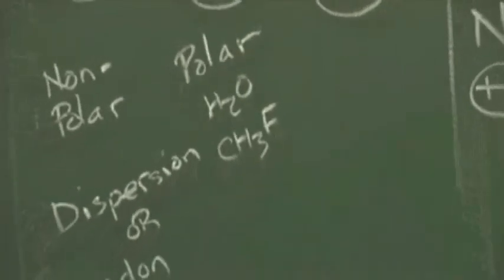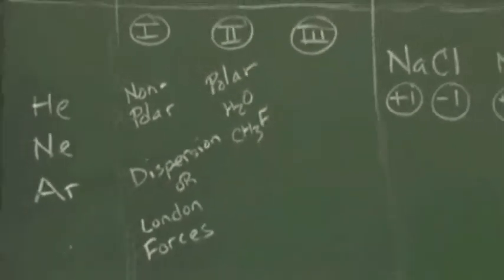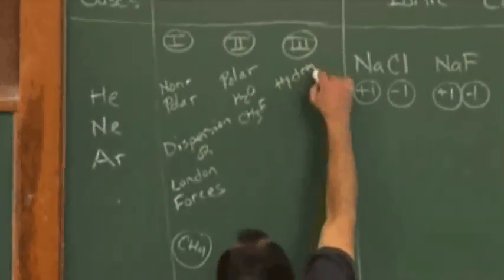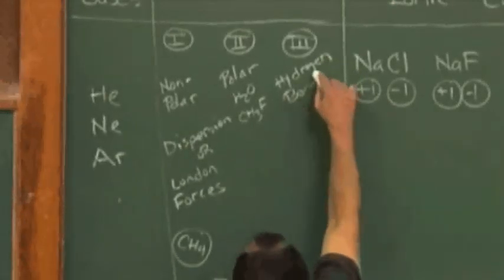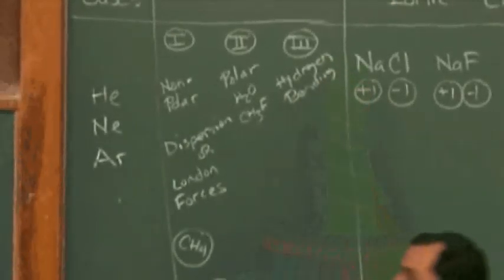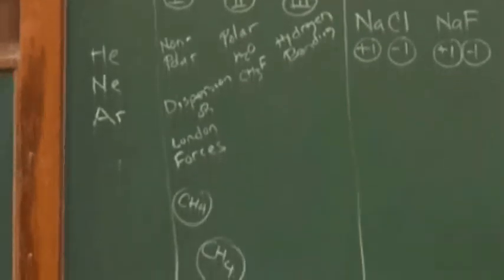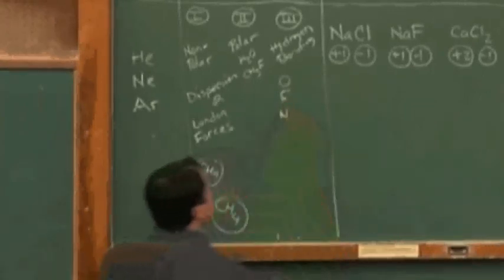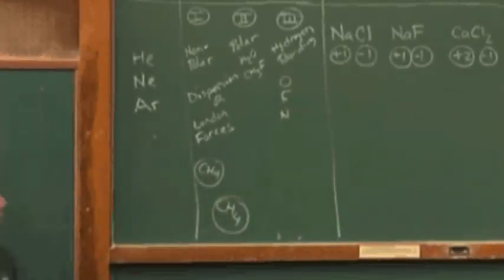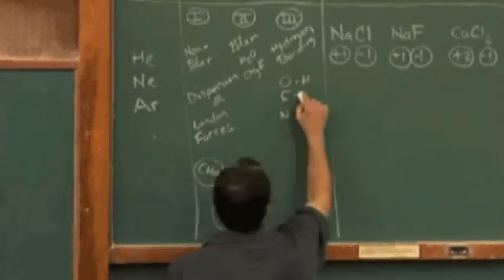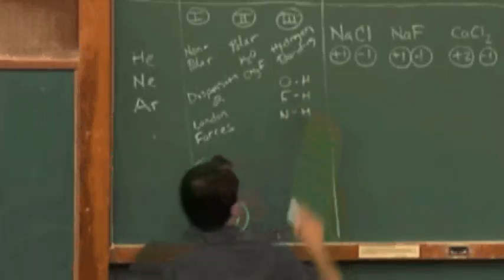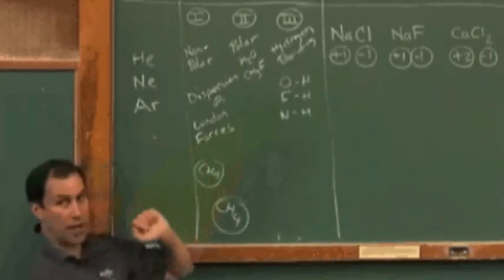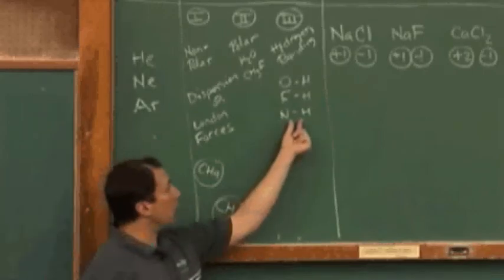Type 3, and this is going to be the strongest attraction that we see in molecules. It's called hydrogen bonding. Hydrogen bonding occurs when we have an extremely electronegative element. Let me list those. When we have oxygen, fluorine, or nitrogen present, and off of one of these is a hydrogen atom.